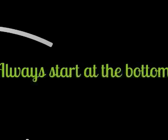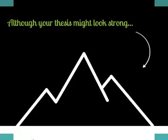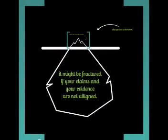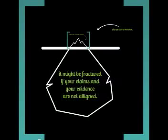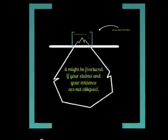Start at the bottom of the analytical essay pyramid by gathering evidence. If you don't begin by gathering evidence first, the thesis you write — although it might look strong — is actually not resting on solid grounds. It might be fractured if your claims and your evidence are not aligned to your thesis. How do I develop a claim from evidence?